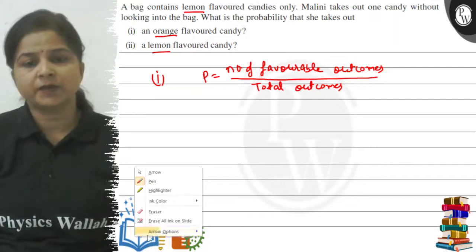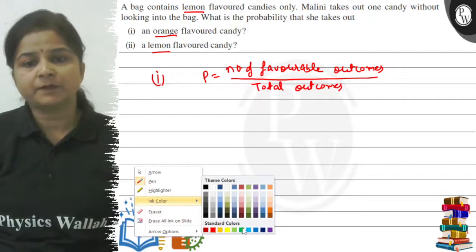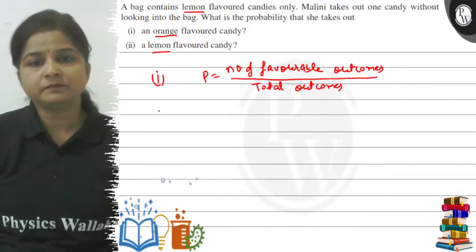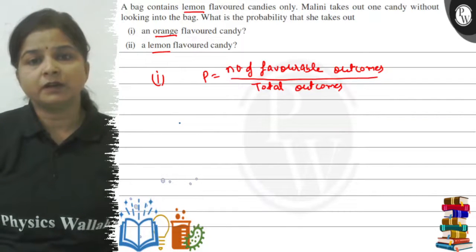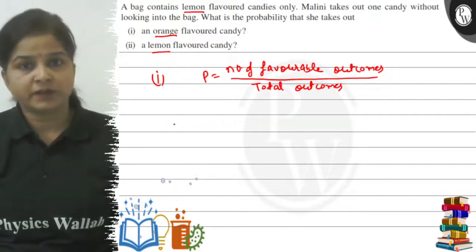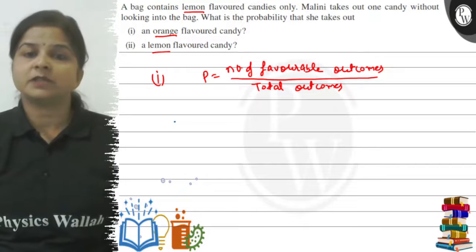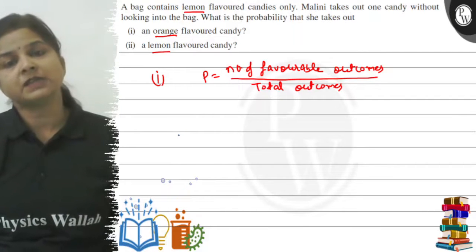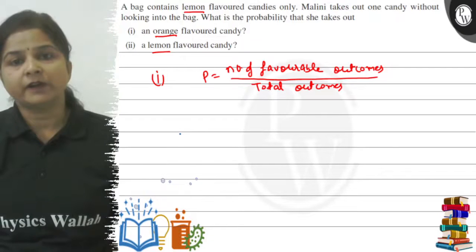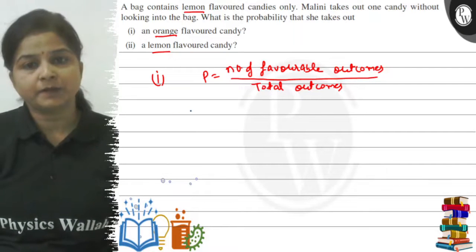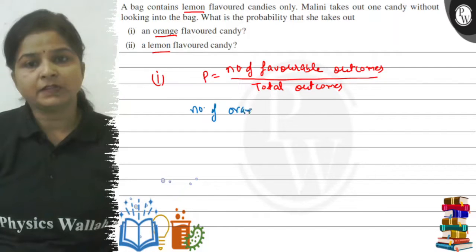Now let's go to our question, the first part. In the first part they have said that the candy is the orange flavor. What is the number of orange candies?